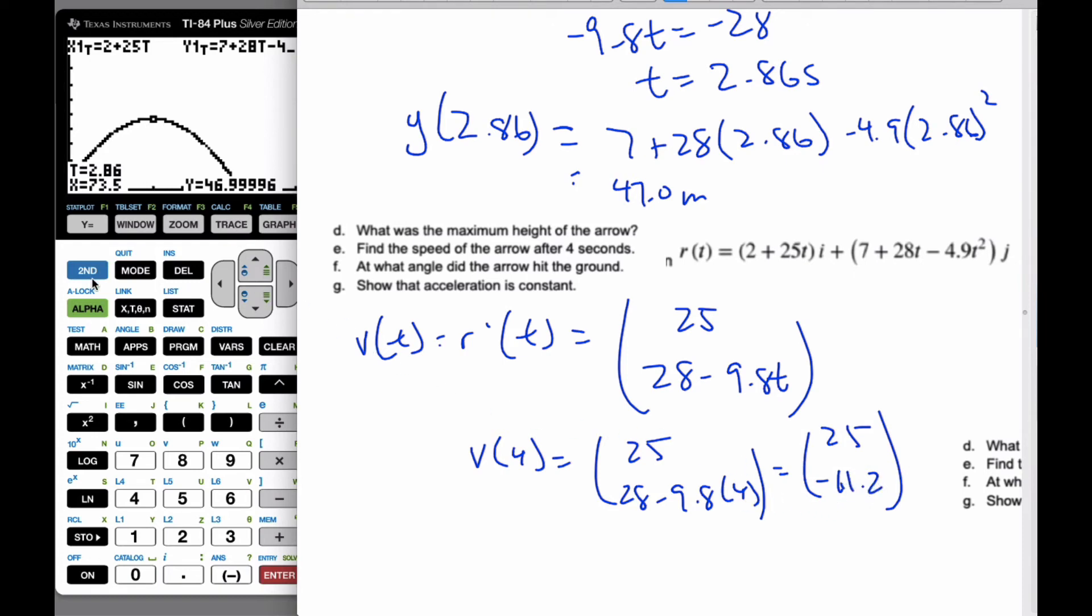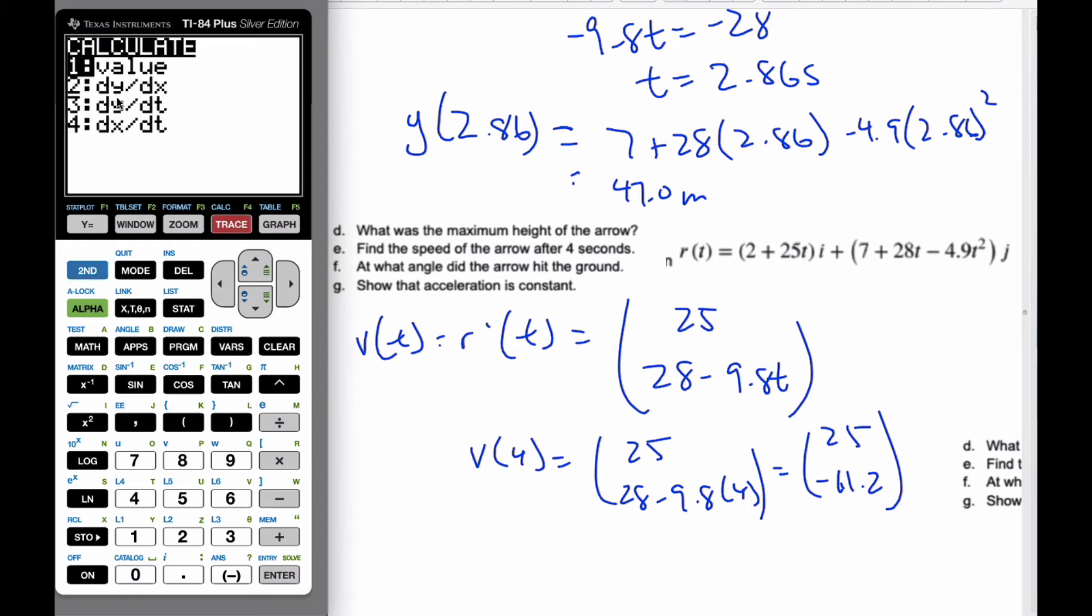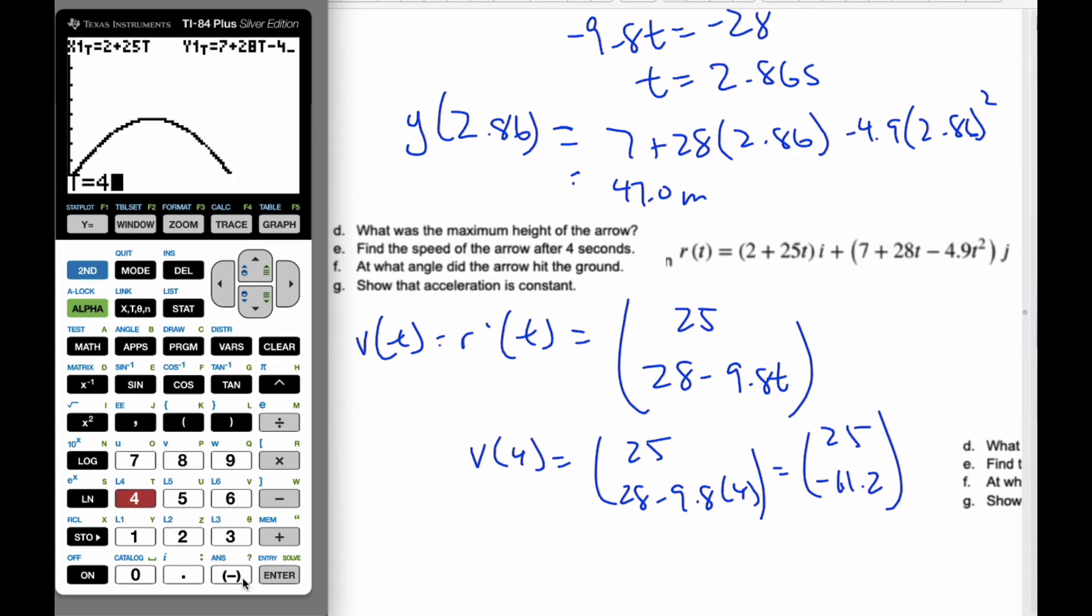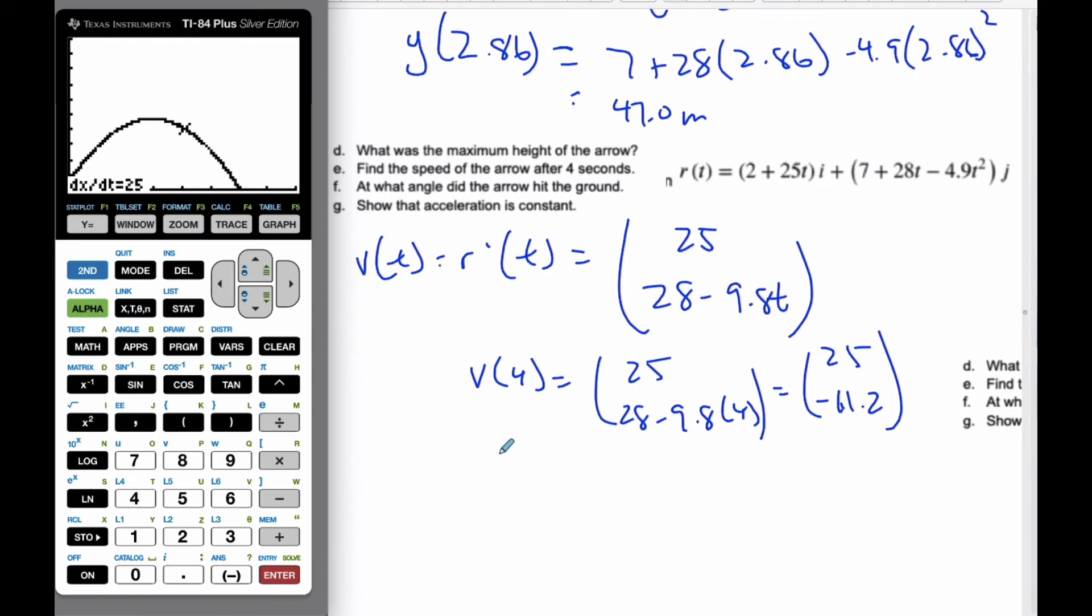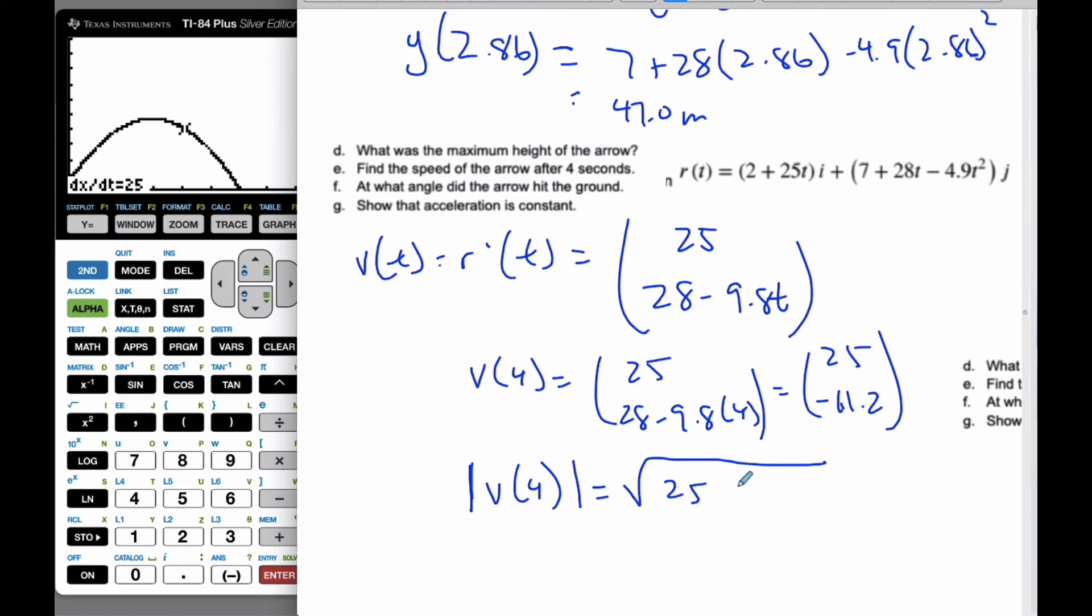I'm going to show you something clever on the calculator. If I calculate, I can find the derivative, which is the velocity of these functions. If I plug in number 3 and do it at 4 seconds, the velocity is -11.2. It's going downwards, pulled down by gravity. Similarly, if I do the x component derivative at 4, I get 25. To find the speed, I need to find the magnitude of this vector, which is √(25² + (-11.2)²), and that's 27.4 meters per second.